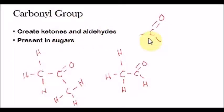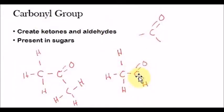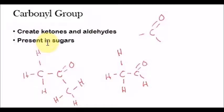A carbonyl group looks like this: it's a carbon double bonded to an oxygen, with two other bonds that can connect to something else. A ketone is when this carbonyl group is in the middle of a chain — bonded to one group on the left and another group on the right. An aldehyde is whenever the carbonyl group is at the end of a molecule, with a group on one side and the carbonyl at the very end. Ketones and aldehydes are present in sugars, and we're going to see a lot of carbonyl groups as we look at more biomolecules through our biology.